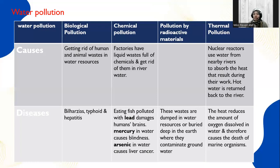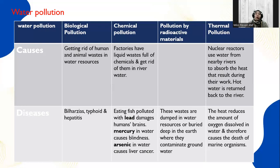Radioactive materials like cobalt-60 found in water cause pollution and damage to marine creatures and marine life. They also contaminate the ground and water. Thermal pollution results from nuclear reactors, which use water from nearby rivers to absorb the heat produced during operation. The hot water is returned to the river, and the heat reduces the amount of oxygen dissolved in the water, causing the death of marine organisms.